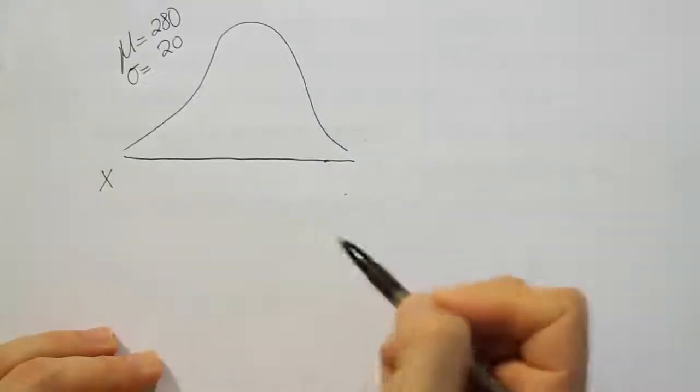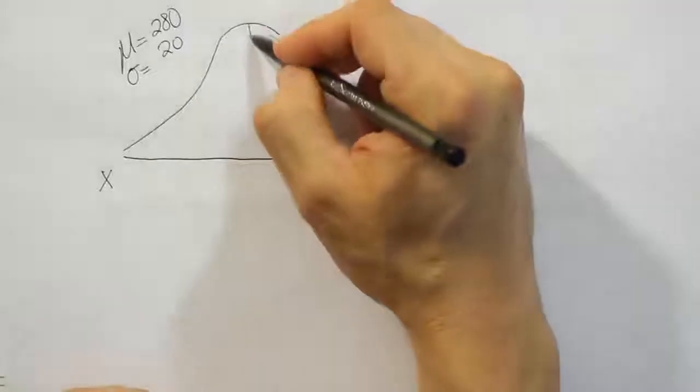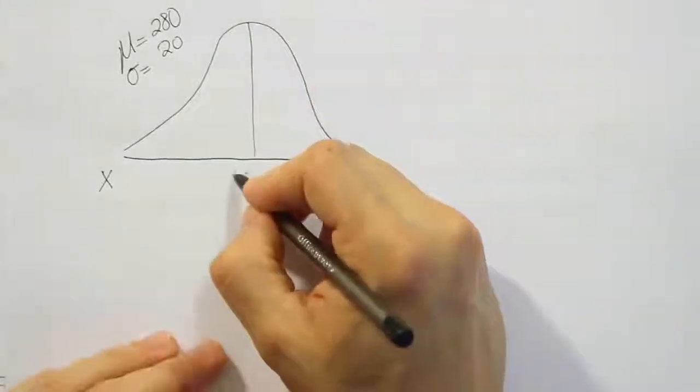Now on this axis down here I'm going to label the information they gave us in the problem. So let's again put the mean in the center, 280.